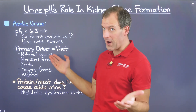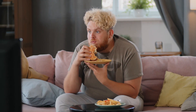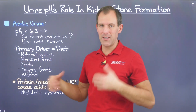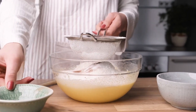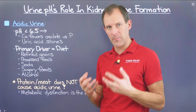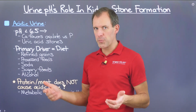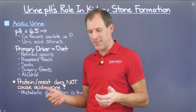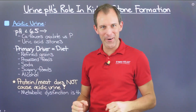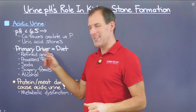Just like with alkaline urine, it is our diet driving acidic urine. The specific culprits include refined grains like white flour and wheat, ultra-processed foods — anything with a dense ingredient label — and those should be avoided as a whole, as they are truly tied to acidic urine.